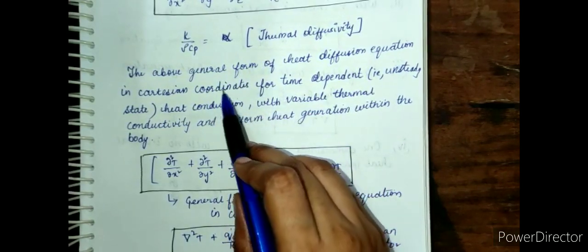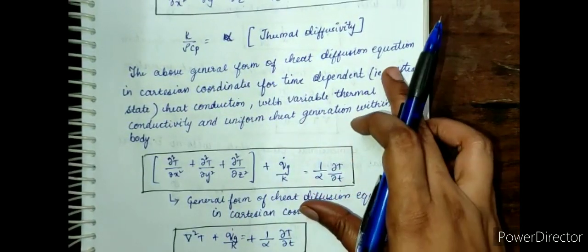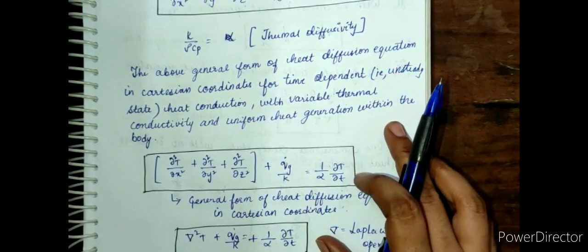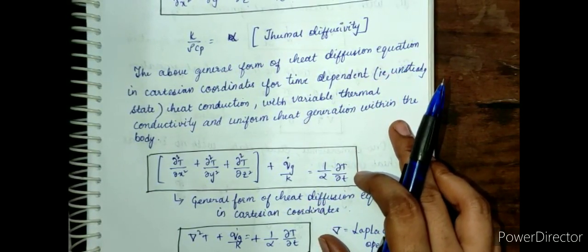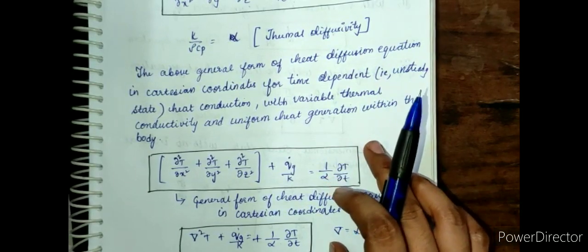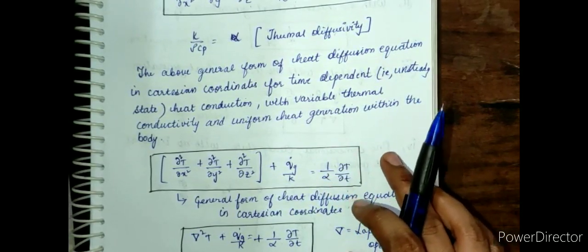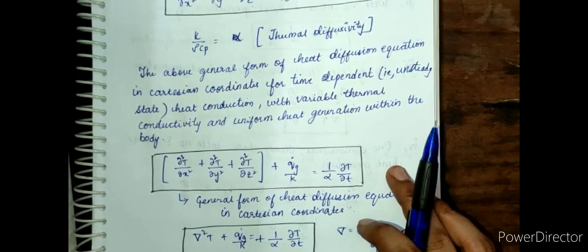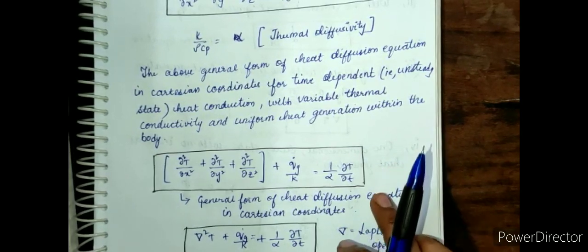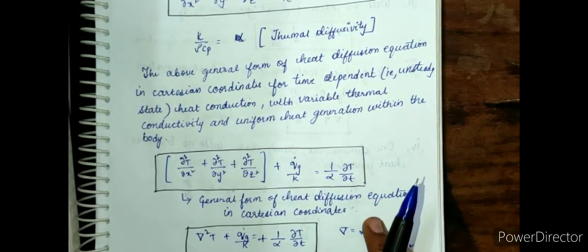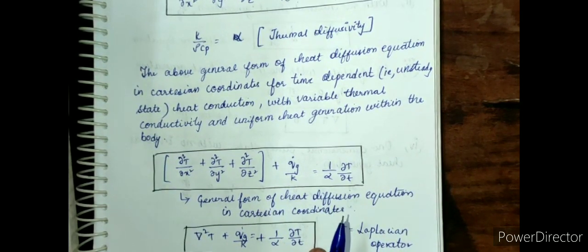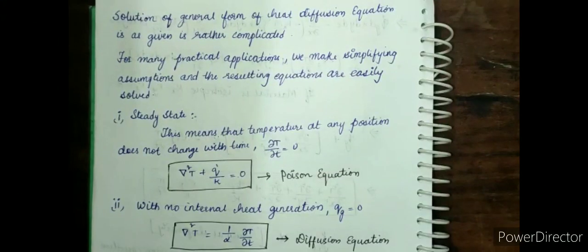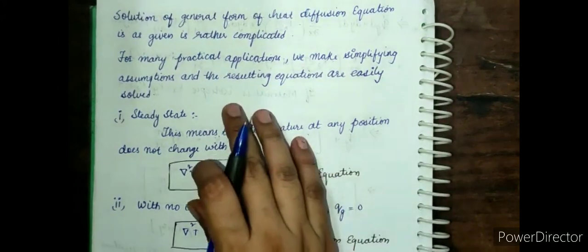Finally, the above equation is called the heat diffusion equation in Cartesian coordinates — for time-dependent, unsteady state, with variable thermal conductivity and uniform heat generation. This equation can also be written as: ∇²T + qg/k = (1/α)·(∂T/∂t), where ∇² is called the Laplacian operator.